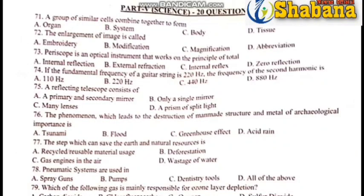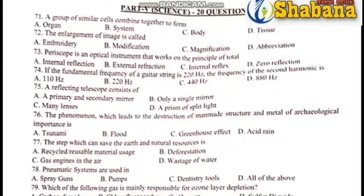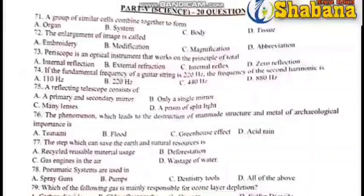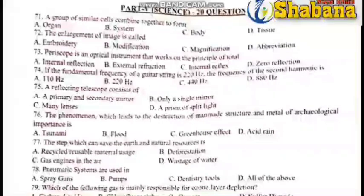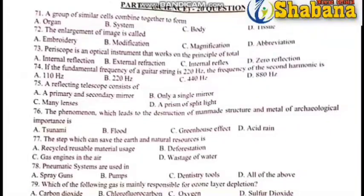Next is a phenomenon which leads to the destruction of man-made structures and metals of archaeological importance. Human beings cause destruction through the process of acid rain, which is the best example. The acid rain is destroyed by sulfuric acids. The state which can save the earth and natural resources — the answer is A.